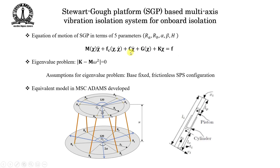We can define the equations of motion for the Stewart platform in terms of five parameters: the radius of the top platform (Ra), the radius of the base platform (Rb), the angle alpha between two connection points on the base (so 2-alpha is the arc between B1 and B6), the angle beta between two connection points on the top platform (2-beta is that arc), and the height H of the top platform with respect to the bottom platform.